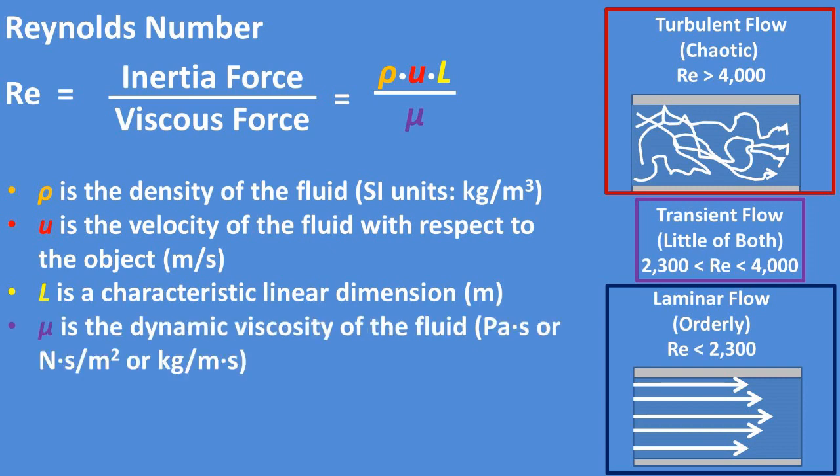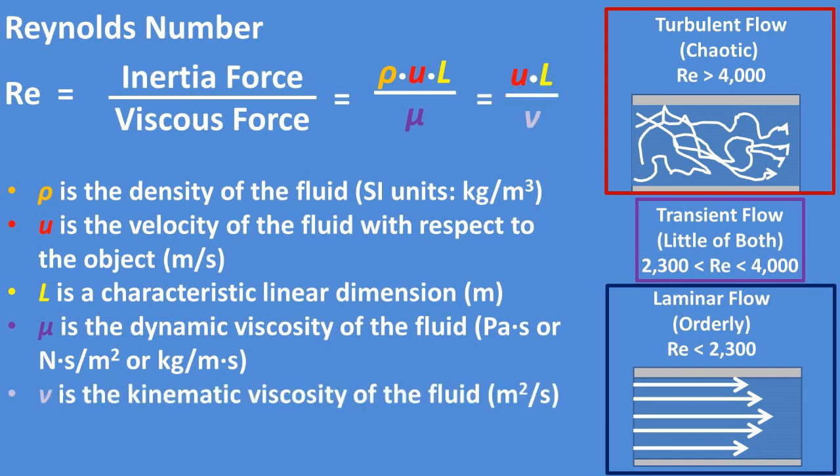This is all divided by the dynamic viscosity of the fluid, which is the internal resistance of the fluid to flow. It is equal to the kinematic viscosity of the fluid times the density of the fluid. Being that density is in both the numerator and the denominator of the formula, it can be cancelled out.